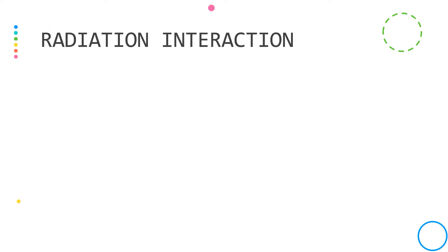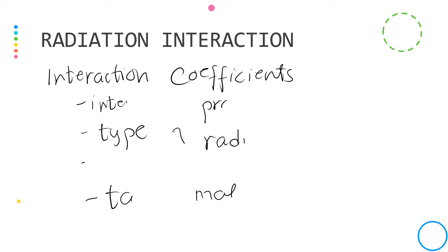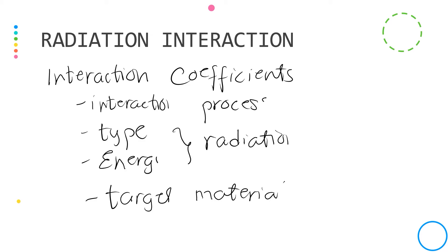The interaction coefficient is dependent on the following: first, the interaction process — whether it is Compton scattering, photoelectric effect, or pair production, or for charged particles, soft or hard collisions; second, it is dependent on the type and energy of the radiation; and third, it is dependent on the target material.